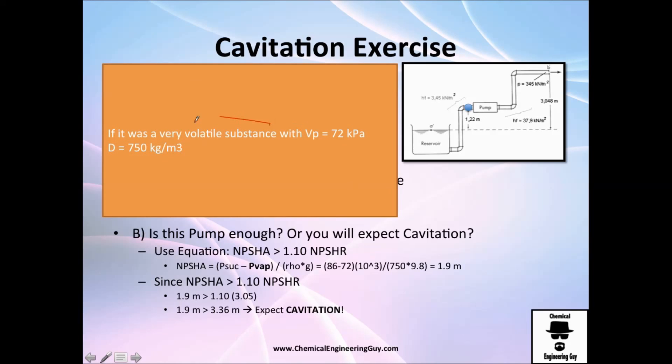Now, what will happen if you have very volatile substance? It is very low density and very high on vapor pressure, which means it'll vaporize very easily. Once again, we only change vapor pressure and density. The suction line is still constant, so 86 minus 72 times 1000 of the kilopascal divided by gravity and its density, which is 750. I got 1.9 meters.